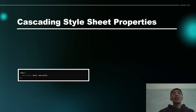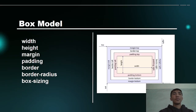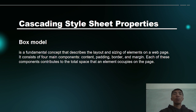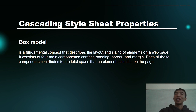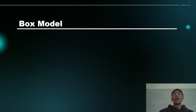Second is the box model. The fundamental concept describes the layout and sizing of elements on a web page, which has components of content, padding, border, and margins. These are the different properties under the box model.